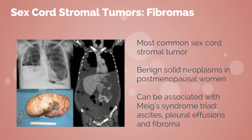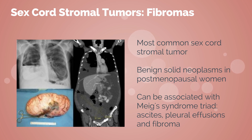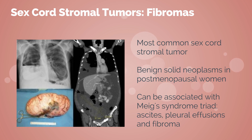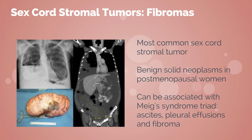Fibromas are the most common sex cord stromal tumor. They are benign solid neoplasms, usually found in post-menopausal women. Fibromas can be associated with Meigs' syndrome, which is a triad of fibromas, ascites, and pleural effusion. This is probably due to vascular endothelial growth factor (VEGF) that increases capillary permeability.